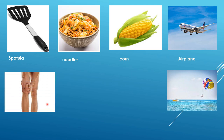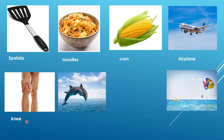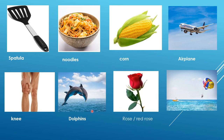Next is knee — the K is silent — k-n-e-e. The person in the picture is holding his or her knee. Then dolphins — d-o-l-p-h-i-n-s — more than one dolphin, so don't forget the S. Next is rose — you can say red rose because we can see the color.